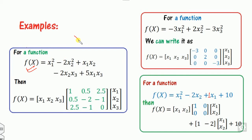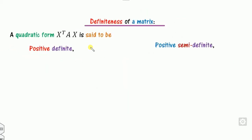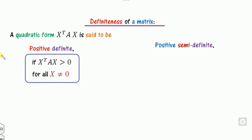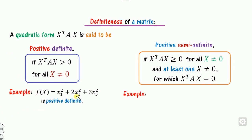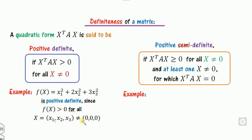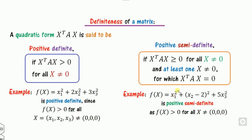Once we write the quadratic function in the form X^T A X, we can determine the nature of the function. It is said to be positive definite when f(x) is always greater than 0 for all non-zero x. The term 'semi' means at least one non-zero value of x exists for which the function equals 0. For example, x1 squared plus x2 squared is always positive for all non-zero x — that is a positive definite function.